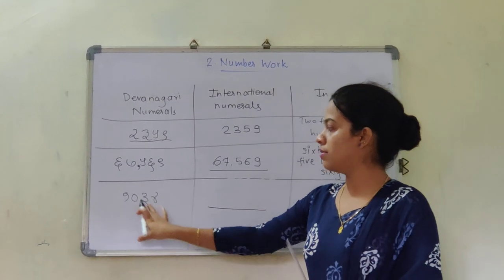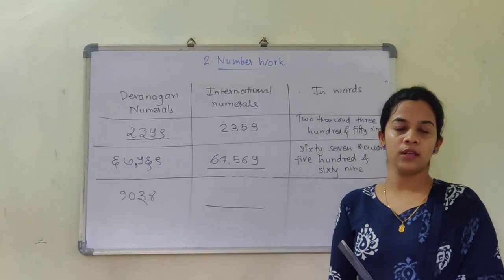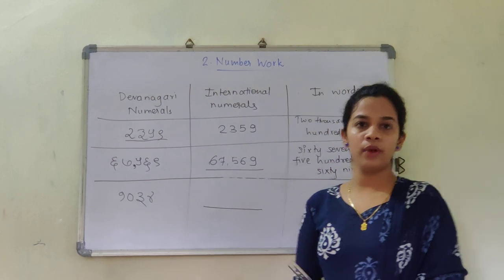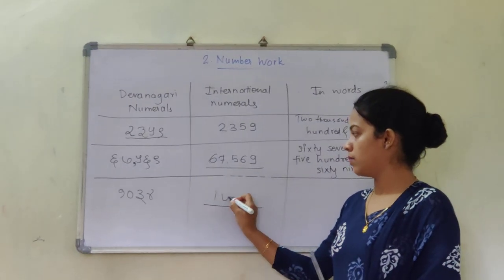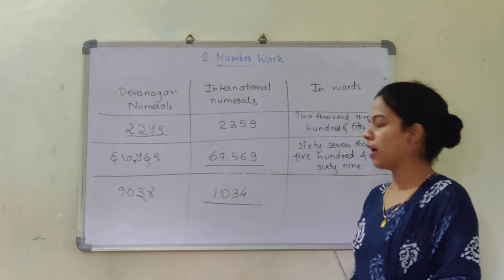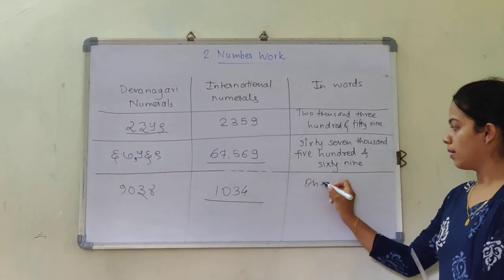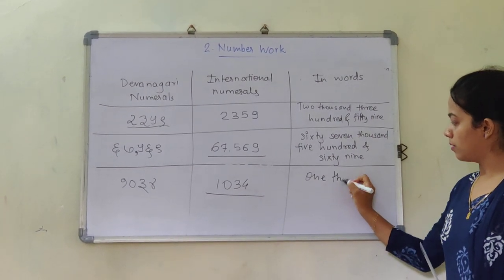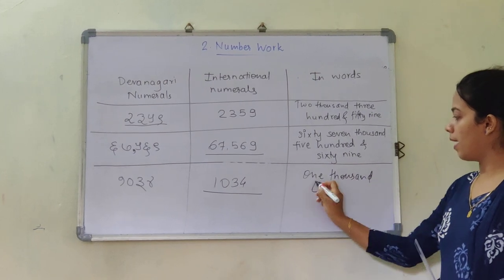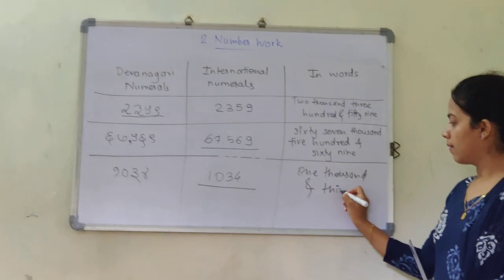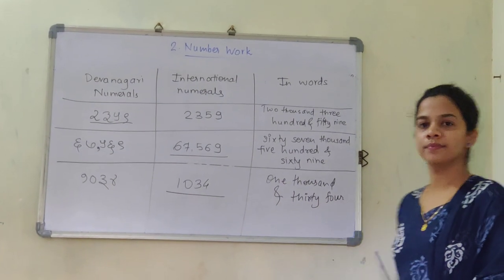Can you tell me now? The digits are 1, 0, 3, 4. How am I going to write this in international numbers? It is 1,034. How am I going to write it in words? It is one thousand and thirty-four.